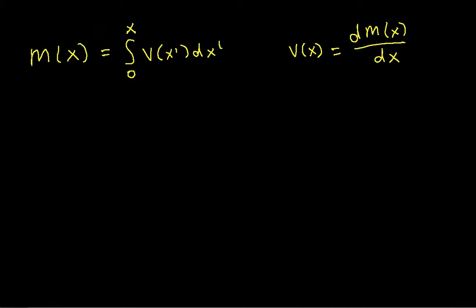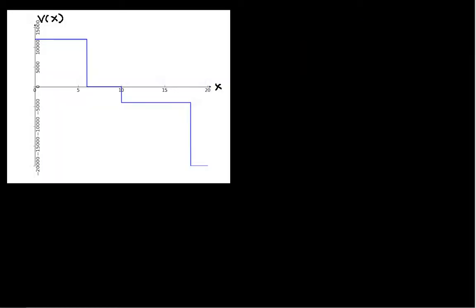Here we have the relationship between the bending moment and the shear force. The bending moment is the integral, or the area under the shear force waveform from 0 to the point that you're interested in. And you can get the shear force waveform as the slope of the bending moment at a given point. Let's go back to our plot that shows the shear force diagram and use this to help us understand how to get the bending moment.